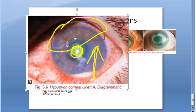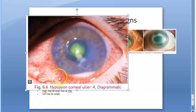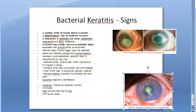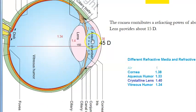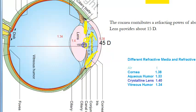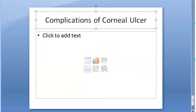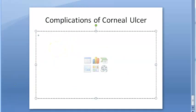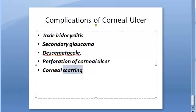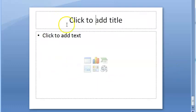Intraocular pressure may be raised — inflammatory glaucoma — because the anterior chamber is full of cells. The iris becomes muddy and the pupil becomes small due to iritis. If left untreated: iridocyclitis, secondary glaucoma, Descemetocele, perforation of the corneal ulcer, and corneal scarring can all occur.